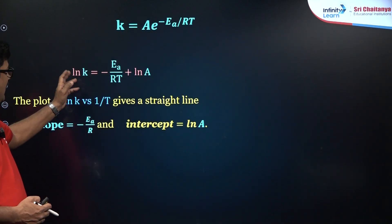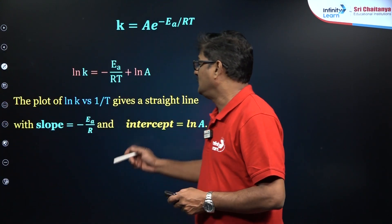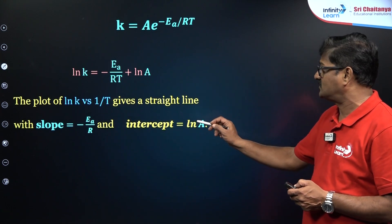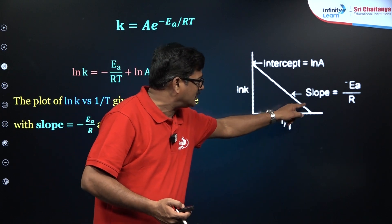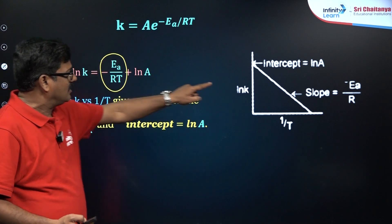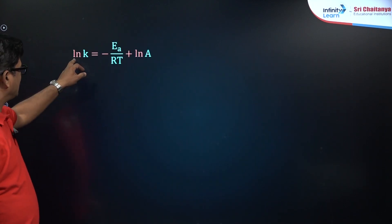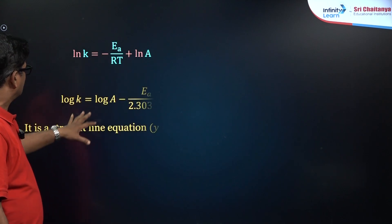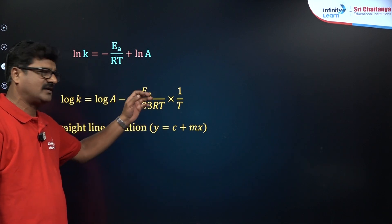Taking the logarithm of k = A · e^(−Ea/RT), we get: ln k = −Ea/RT + ln A. The plot of ln k versus 1/T gives a straight line with a negative slope. Converting to log base 10: log k = log A − Ea/(2.303 RT) × (1/T).